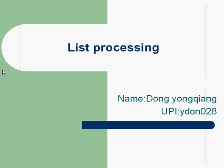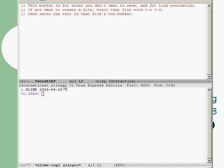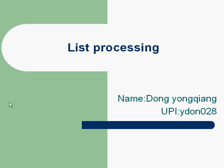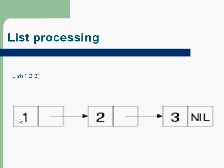Now let me talk about list processing. The list is a composite data type and sometimes it's a very good solution to certain problems. First, let me see some examples of list processing. Here we create a list: 1, 2, 3. Their structure looks like this: 1, 2, 3, and their end is nil.